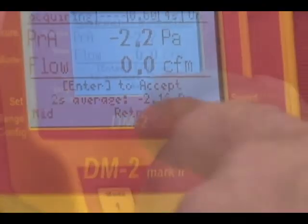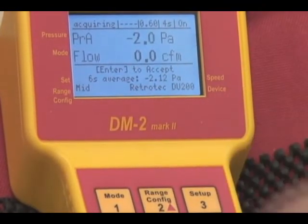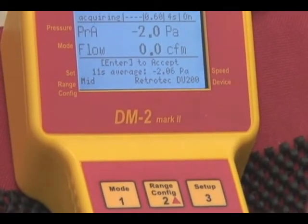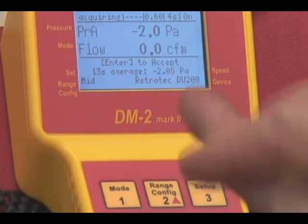We press the baseline key and it says acquiring up here. We'll acquire this baseline for a few seconds. It depends on how much it's fluctuating. If it's fluctuating a lot, we need to acquire it for a long period of time.